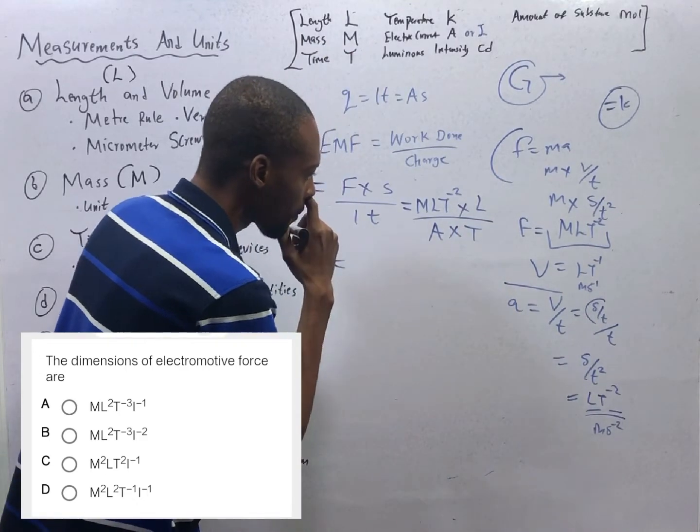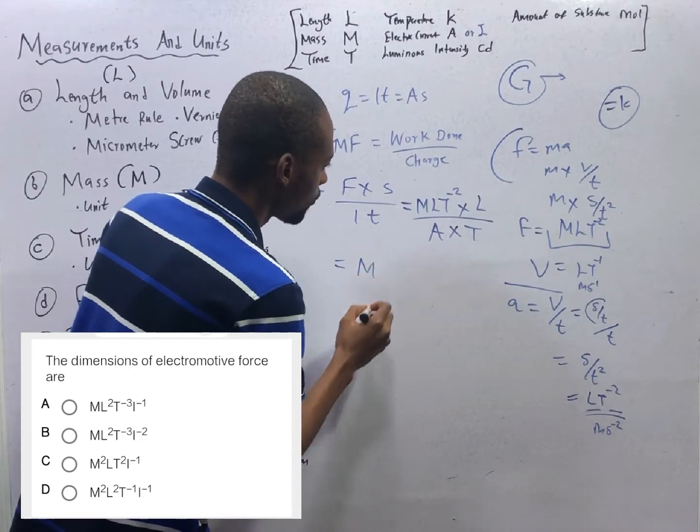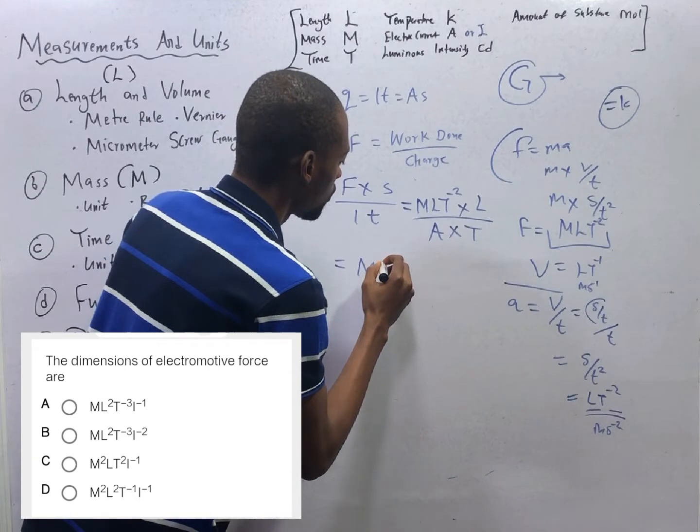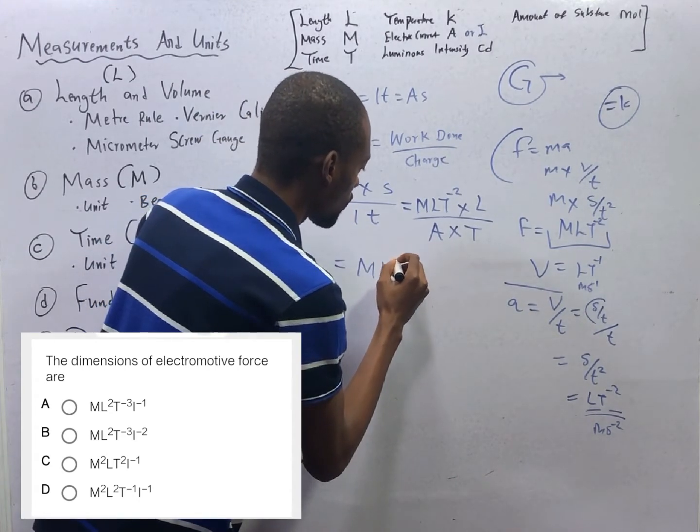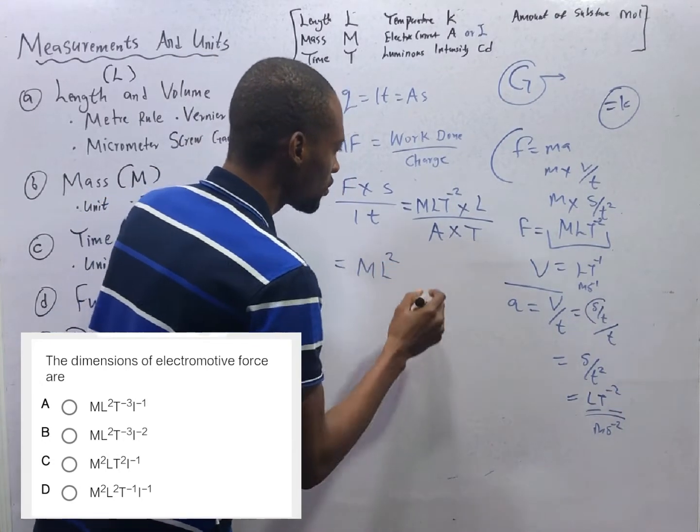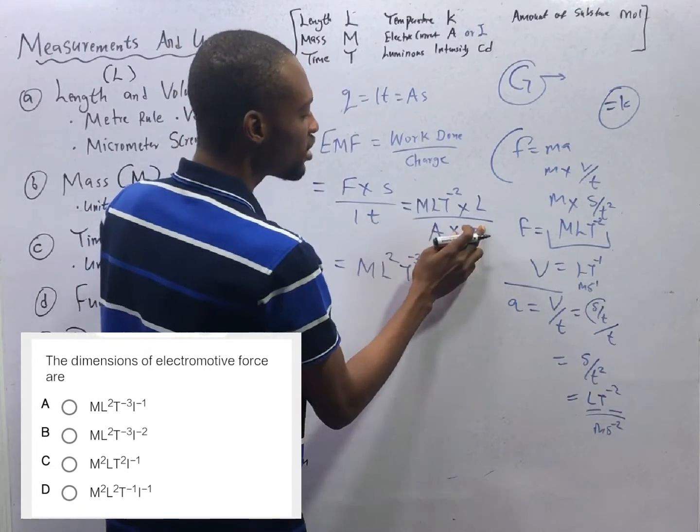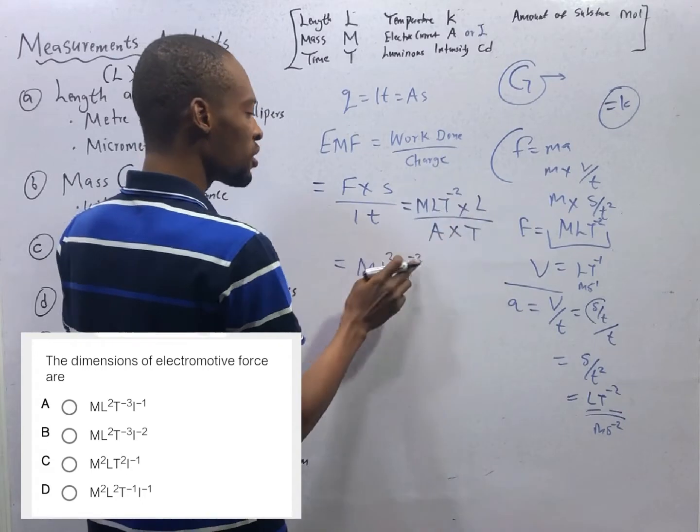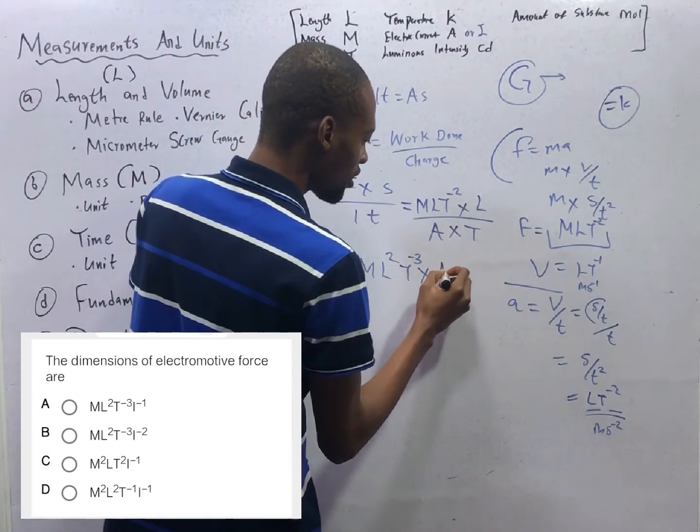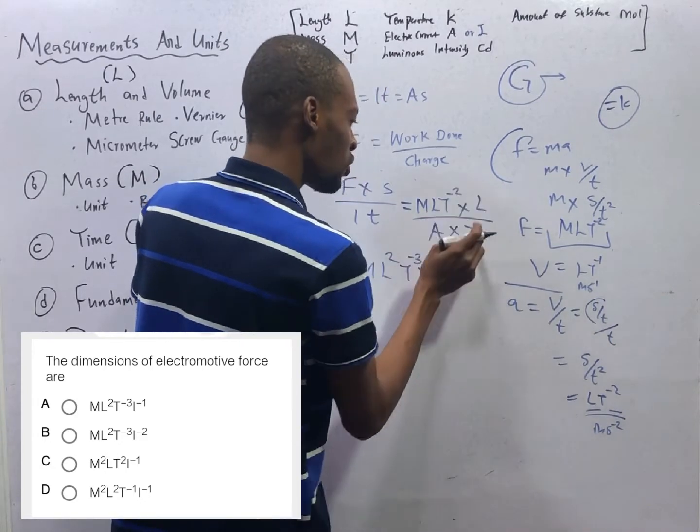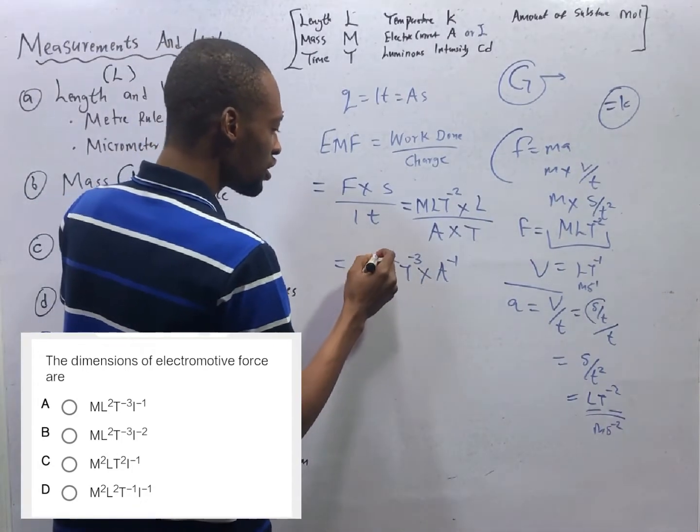So current is either I or A. So let's say A times T is time. This will give you M L squared T to the power of minus 3. Minus 2 here. This one goes up to become another minus 1. So everything becomes minus 3. Times A raised to the power of minus 1. This goes up to become minus 1.